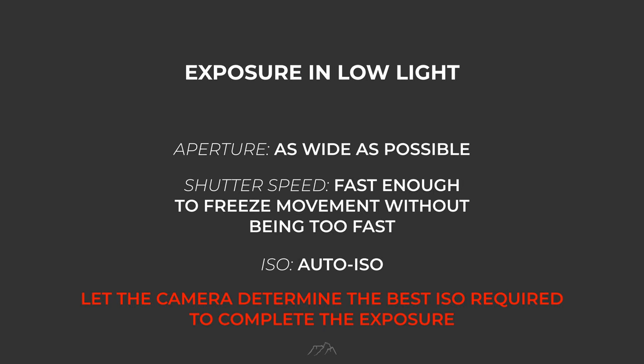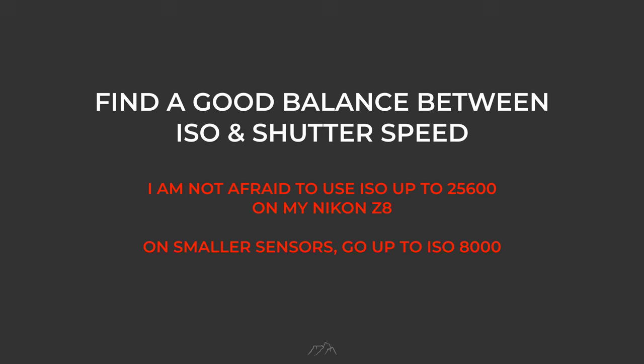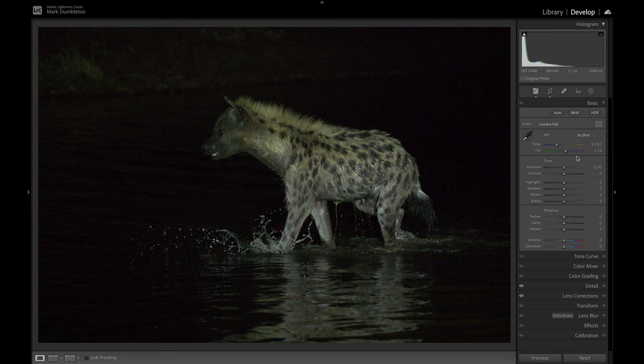The most crucial setting here is your shutter speed. If you use a shutter speed that is too fast, the camera will have to use a very high ISO to properly expose the photo. Conversely, if you use a shutter speed that is too slow, the image may be blurry and unusable. Find the right balance between ISO and shutter speed. Getting the exposure right is key — you can't afford to underexpose the photo, as doing so will lead to more noise when you increase the exposure in post-processing.